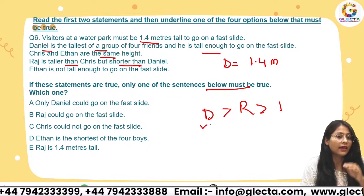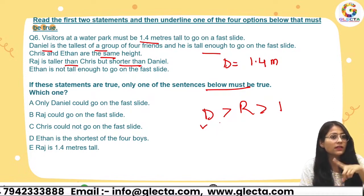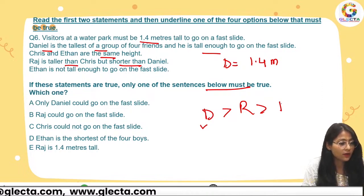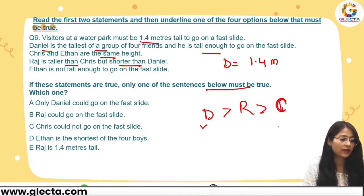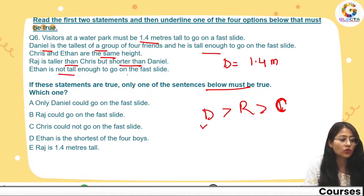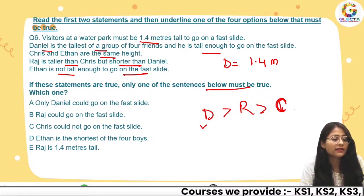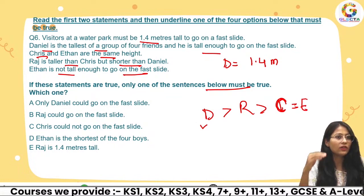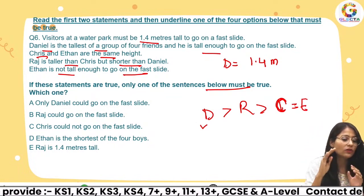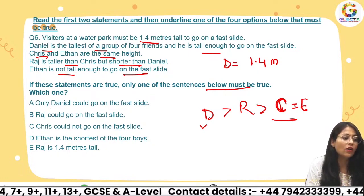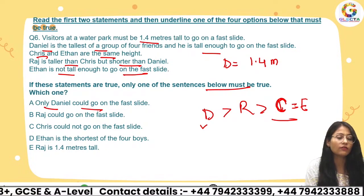Raj is taller than Chris but shorter than Daniel. Ethan is not tall enough to go on the fast flight, which means Chris also cannot go on the fast flight, since they are the same height. Looking at the statements: only Daniel could go on the fast flight; Raj could go — we are still not sure. Chris could not go on the fast flight.